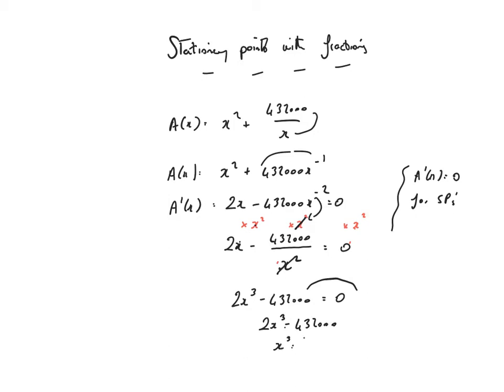x cubed is equal to 432,000 divided by 2. So I've got x cubed is equal to 216,000. And then to get from x cubed down to x, I'm going to take the cube root. The cube root of 216,000 is 60. So the stationary point occurs when x equals 60.